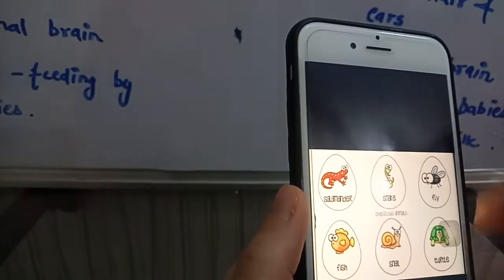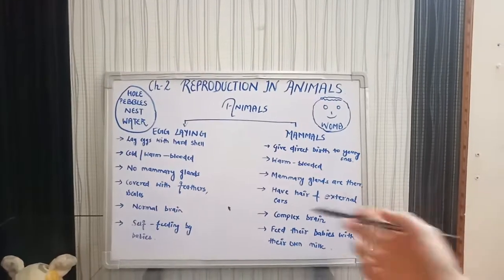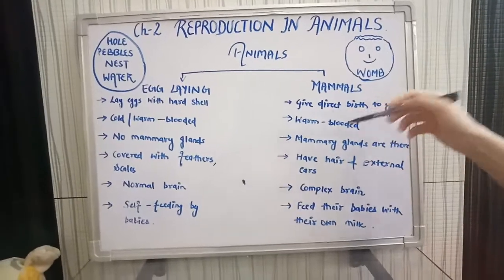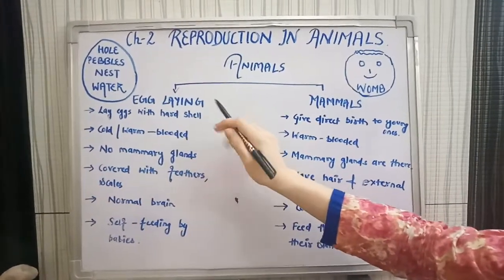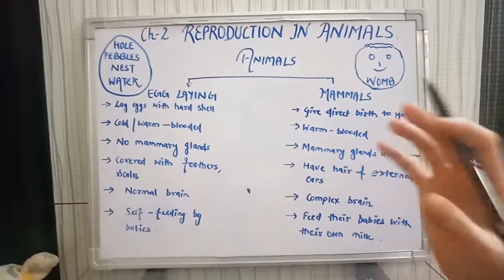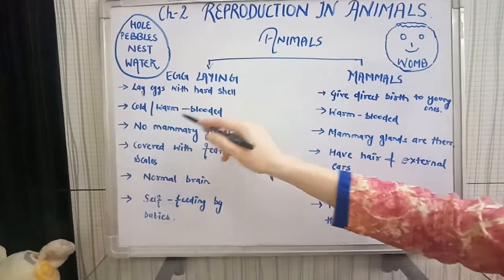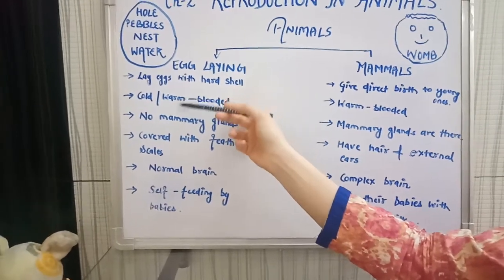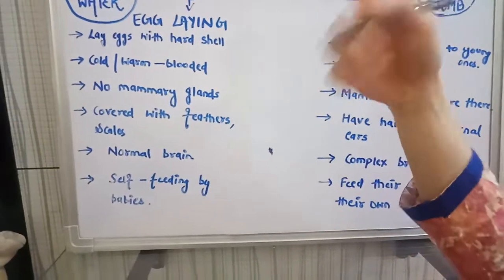Egg-laying animals are also called oviparous animals, and mammals are known as viviparous animals. Egg-laying animals lay eggs with a very hard shell to protect them from the outer environment. Egg-laying animals are cold as well as warm-blooded, but most of them are cold-blooded except birds, which are warm-blooded because they need to keep their body warm for further processes.